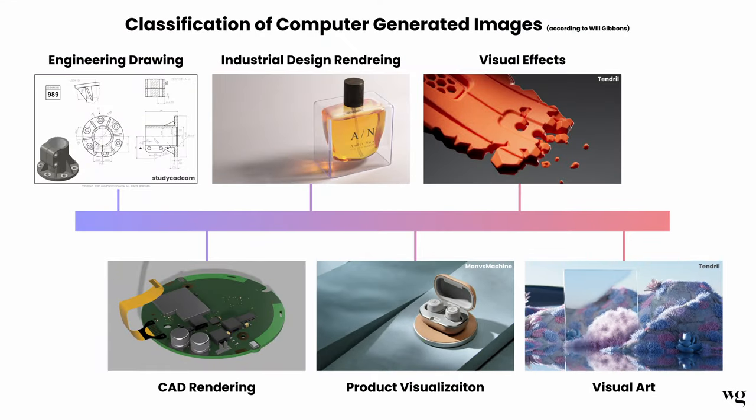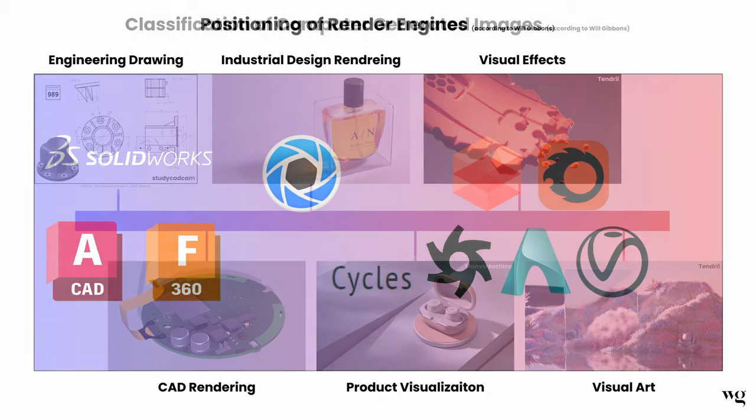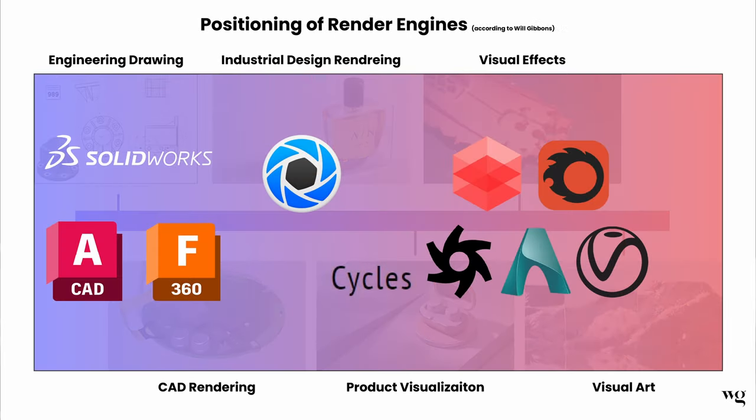As this image shows, I've attempted to position some popular render engines relative to each of these categories of CGI. Now remember, there's no hard and fast rule here — this is purely my opinion based on my observations. So if Keyshot is somewhere in the middle on this chart and the software to the right seems more capable, then why do so many designers use Keyshot? To answer this, we have to discuss something called the rendering pipeline and why it matters.